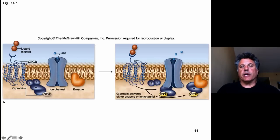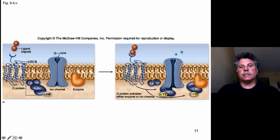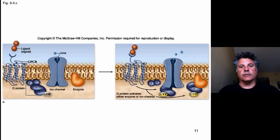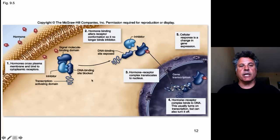We left off talking about G-protein coupled receptors and the heterotrimeric G-proteins. We will pick up the heterotrimeric G-proteins and their coupled receptors again when we get to talking about second messengers in cells. But for now, let's move on and consider another type of receptor for signals involved in cell communication.